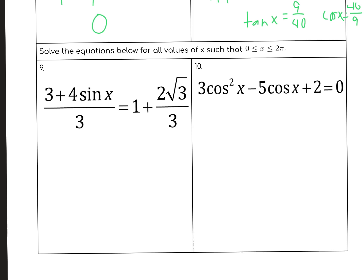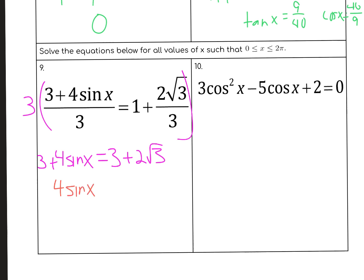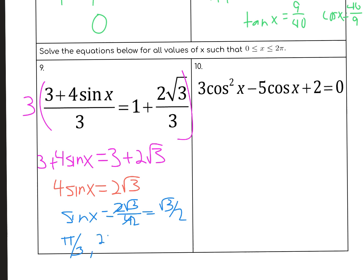Solve the equations. There are lots of different ways to do these. First I want to multiply everything by 3, so that's going to give me 3 plus 4 sin x — that 3 on the left side will go away, 3 times 1 is 3, and that 3 down below will go away also. Now subtract 3 from both sides: 4 sin x equals 2√3. Divide by 4: sine of x is 2√3/4 which is √3/2. Sine is √3/2 at π/3, and sine is also positive in the second quadrant, so 2π/3. The domain says between 0 and 2π, so I have done it.